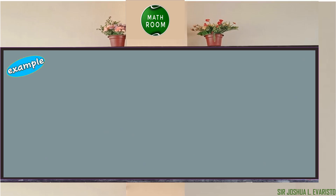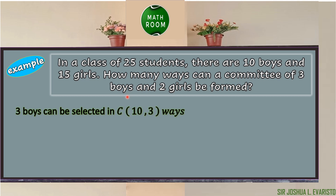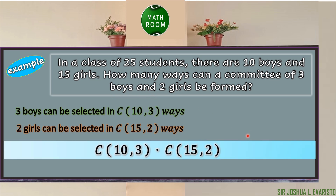Let's have our last example. In a class of 25 students, there are 10 boys and 15 girls. How many ways can a committee of 3 boys and 2 girls be formed? We start by getting the number of ways to select 3 boys and the number of ways to select 2 girls. So 3 boys can be selected in C(10, 3) ways, and 2 girls can be selected in C(15, 2) ways. Using the fundamental counting principle, the total number of ways is C(10, 3) × C(15, 2).